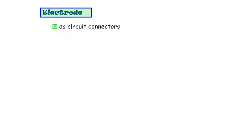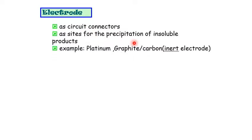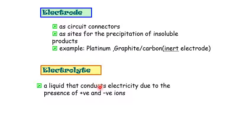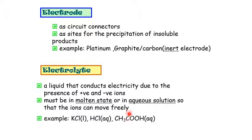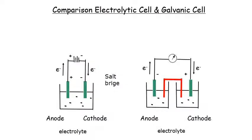The inert electrode serves as a circuit connector, aside for the precipitation of insoluble products. Examples of inert electrodes include platinum, graphite, and carbon. The electrolyte is a liquid that conducts electricity due to the presence of positive and negative ions. It must be in molten state or aqueous solution so that ions can move freely. Examples include potassium chloride, hydrochloric acid, and ethanoic acid.